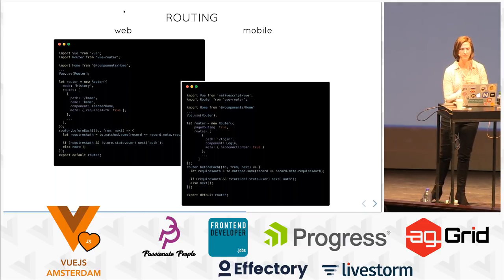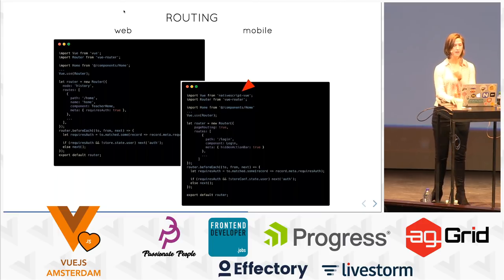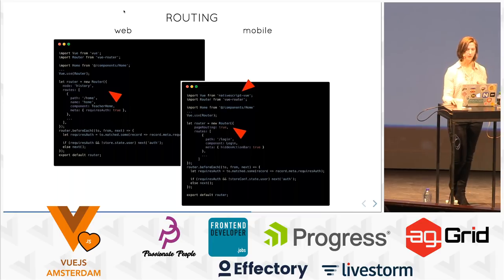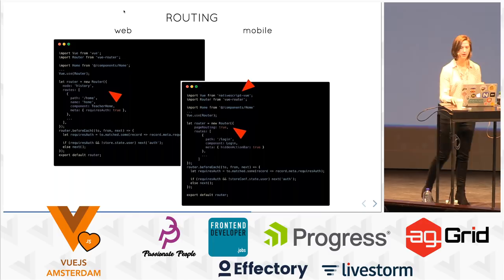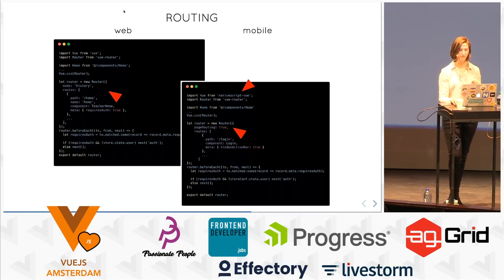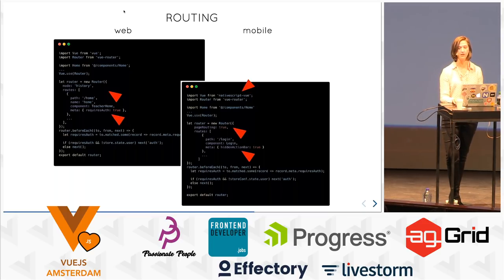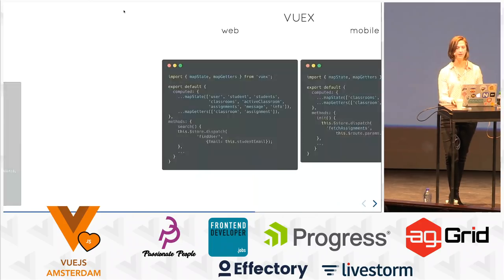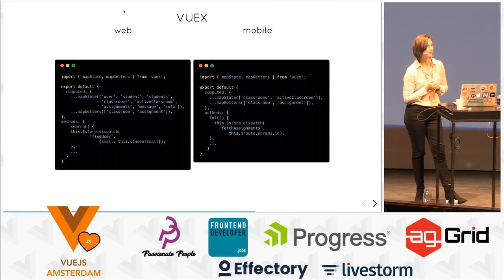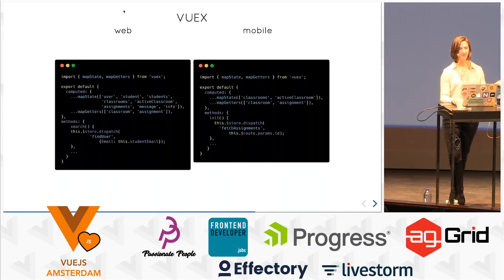Let's look at some differences between how your web app and mobile app look side by side. On the mobile app, I import NativeScript Vue, and then make a couple of tweaks to the router. On the web, I use mode history to get rid of those hashes in the URL. On mobile, I use page routing, which also allows me to use single file components. In the meta, I use requiresAuth true — and on mobile I can also hide the action bar for the login page by setting hiddenActionBar to true. Vuex is literally the same thing on web and mobile, which is really exciting.